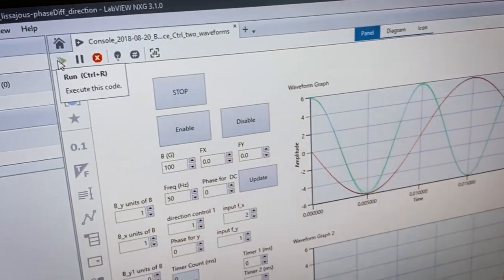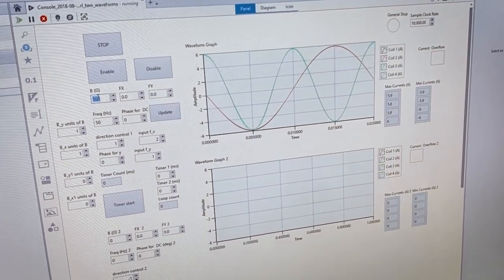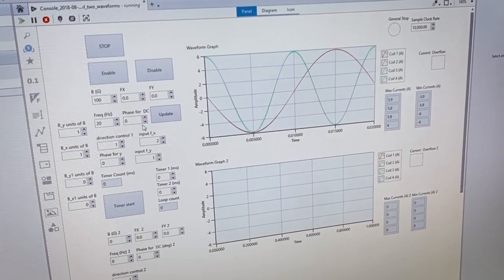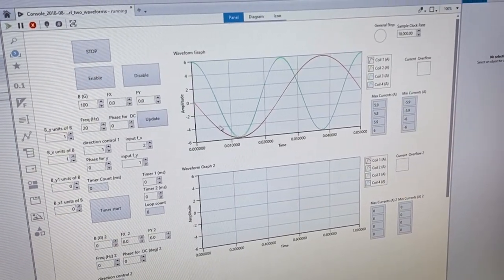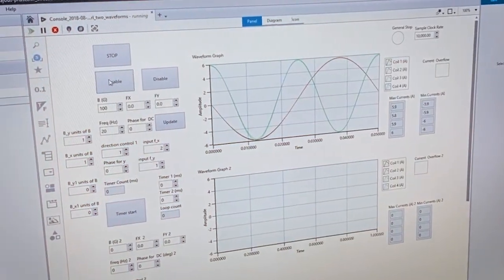So we start the software by clicking here and then we put the value of the field strength which we want. We put the frequency that we want and when we click update, we see that the graph changed. And once we are happy with that, we click on enable.